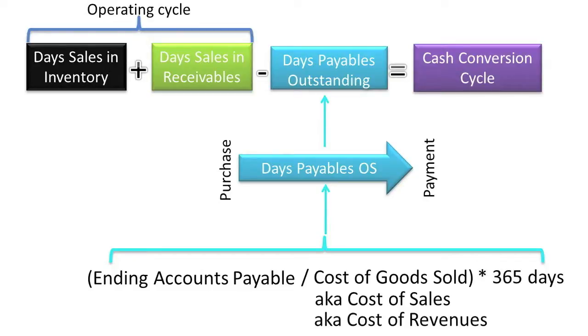When companies increase their Days Payables Outstanding, their Cash Conversion Cycle decreases, and they are able to keep their cash longer and use it for other purposes.